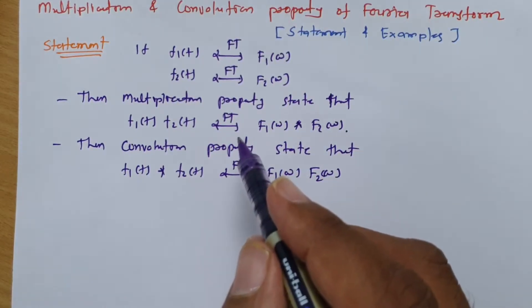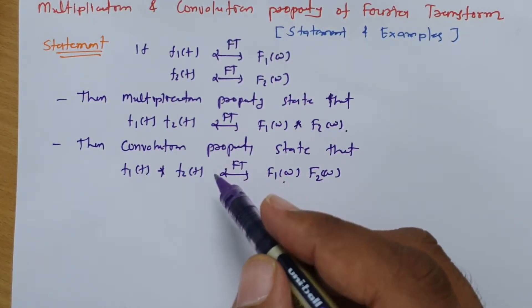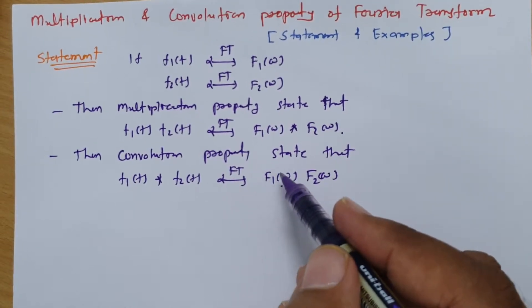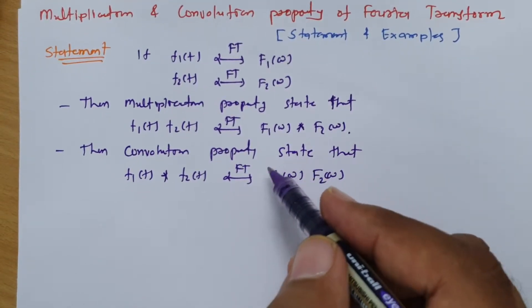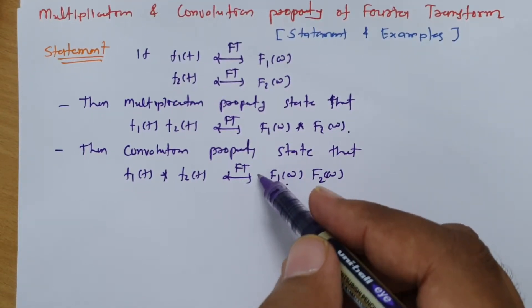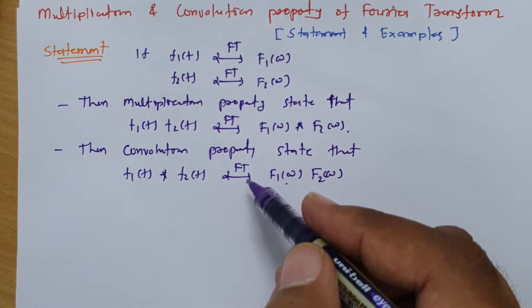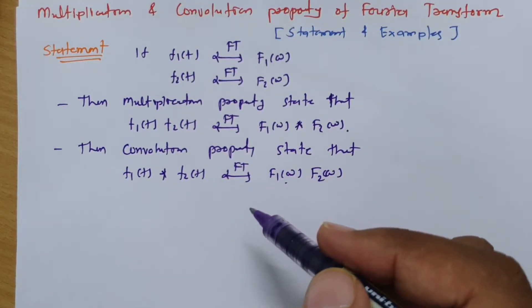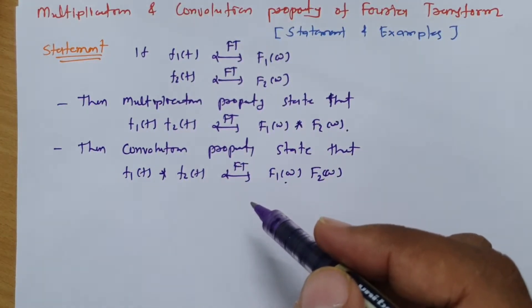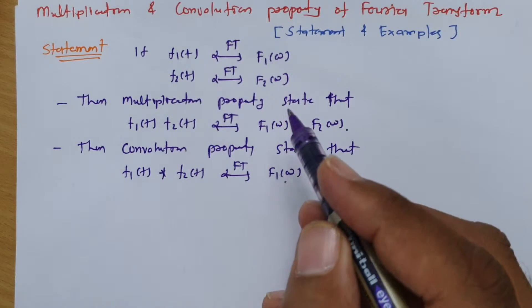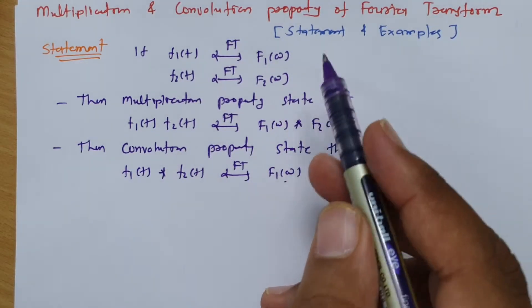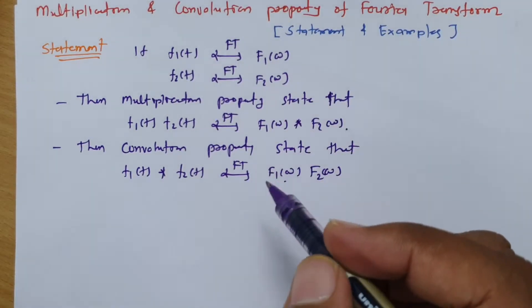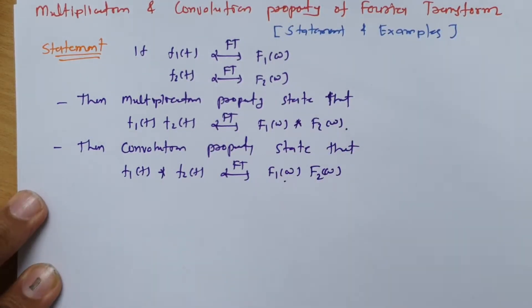This is a very essential property. Sometimes this property will make the solution of an example so easy, which is why this property is so essential. Let us have some examples so it will be more clear how this property solves examples easily.